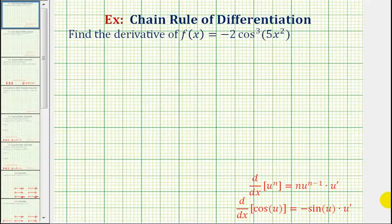We want to find the derivative of f(x) equals negative two cosine cubed of five x squared. The first thing we should recognize is that our function is a composite function, and therefore to find the derivative, we have to apply the chain rule.